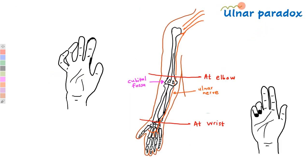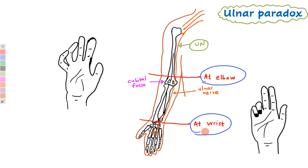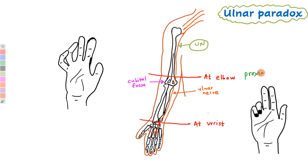Now we are going to see what is ulnar paradox. Ulnar paradox refers to the different manifestations of the hand when the ulnar nerve is damaged at two different sites: when it is damaged at the elbow at a proximal point, and when it is damaged at the wrist at a distal point.